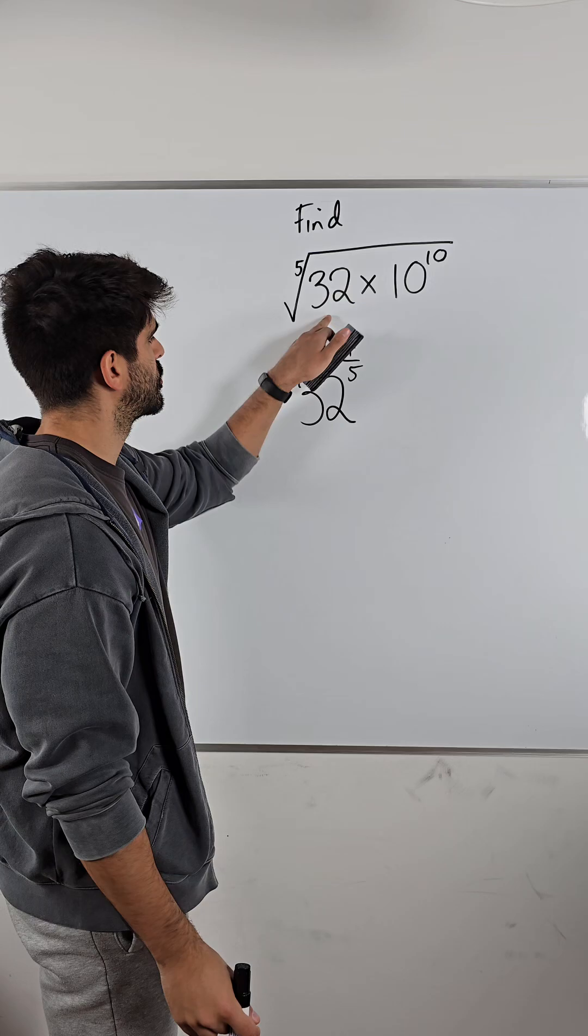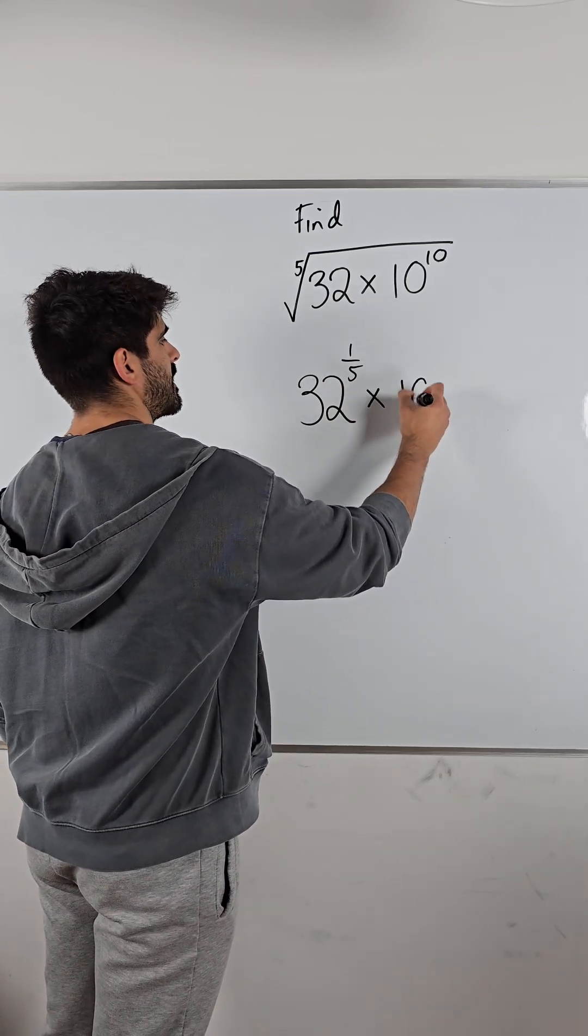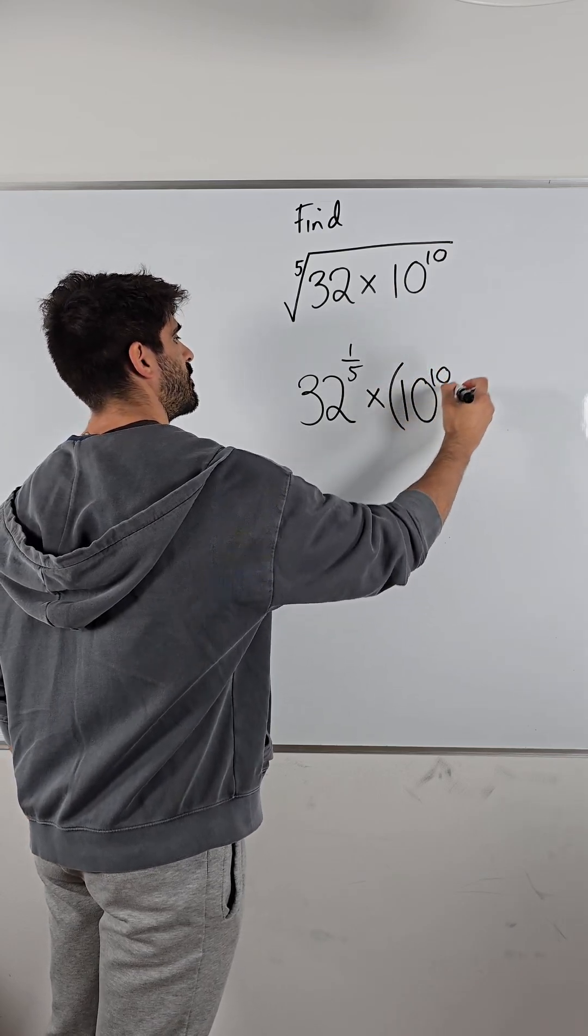Okay, so it's the fifth root of 32, which is 32 to the power of one-fifth. Multiplied by 10 to the power of 10 raised to the power of a fifth. But because we already have a power here, we're going to have to use a power rule.